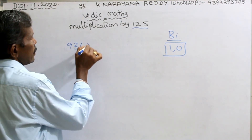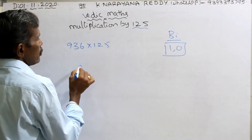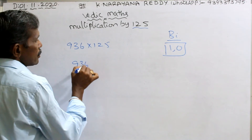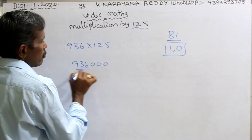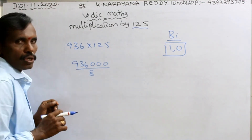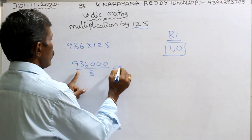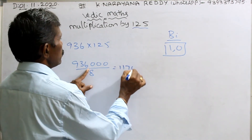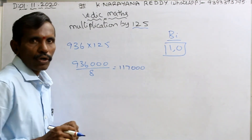936 into 125. Same method — 936,000 by 8. The answer is 117,000. That's all.